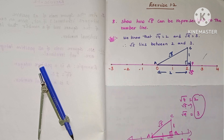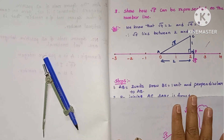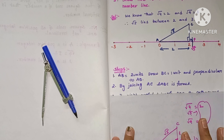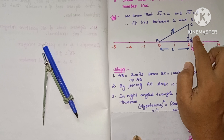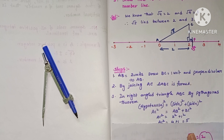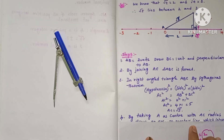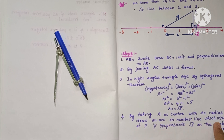To summarize the steps: AB equals two units; draw BC equals one unit perpendicular to AB. By joining A and C, triangle ABC is formed — a right angle triangle. By Pythagoras theorem, AC squared equals AB squared plus BC squared equals 2 squared plus 1 squared equals 4 plus 1 equals 5, so AC equals root 5. Taking A as center with AC as radius, draw an arc on the number line which intersects at P. Point P represents root 5 on the number line.